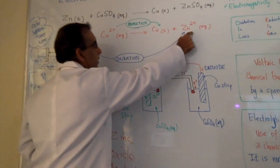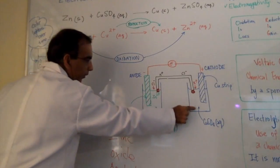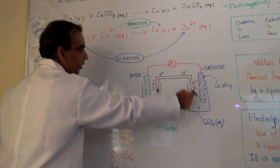Zinc becoming zinc ions in solution, and copper sulfate, copper ions in solution, would become solid copper.